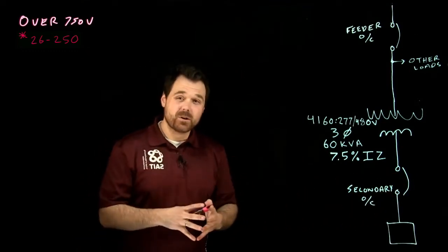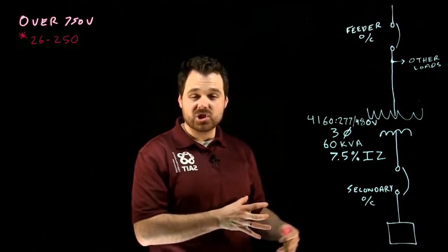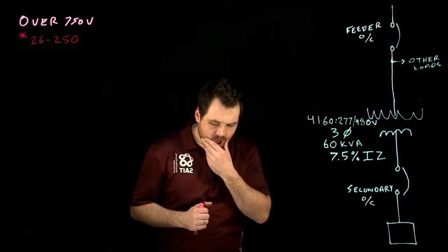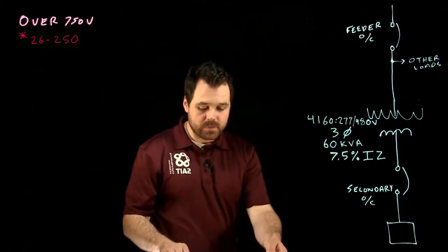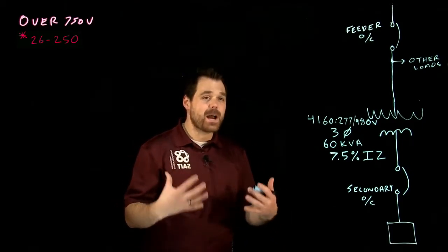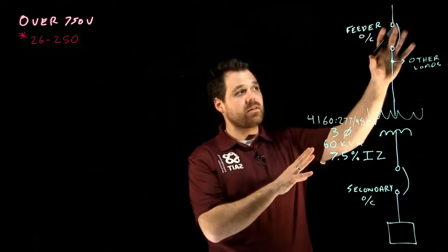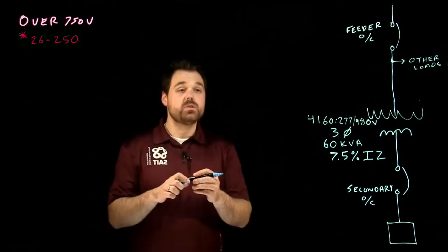We're also going to size the secondary overcurrent. Now, secondary overcurrent isn't required by code, but sometimes in the field, on-site, we might be required one by the engineer, or just based on the type of load, we might need one. In order to start, what I want to do is figure out what my primary current is, or my I primary. I'm going to need to know this in order to double-check that this overcurrent is okay. We're into 26,252.